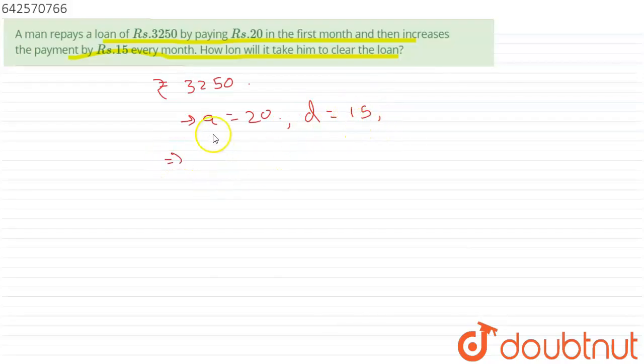So now we are being asked how long will it take to clear the loan. If we see that, then we have to apply the formula of Sn here. Sn represents the sum of n terms of an AP, so that will be equal to n by 2 multiplied by 2a plus n minus 1 multiplied by d.